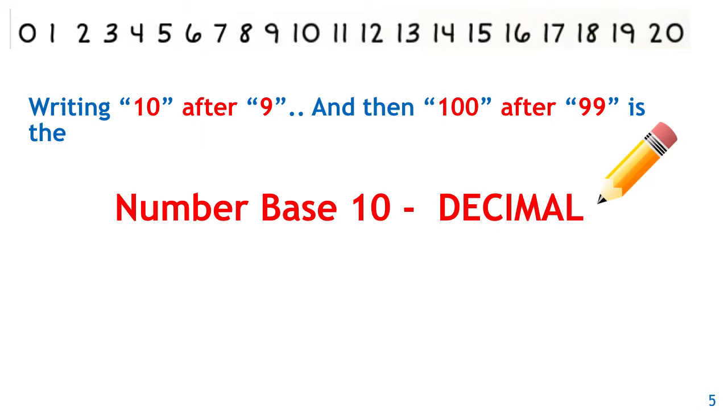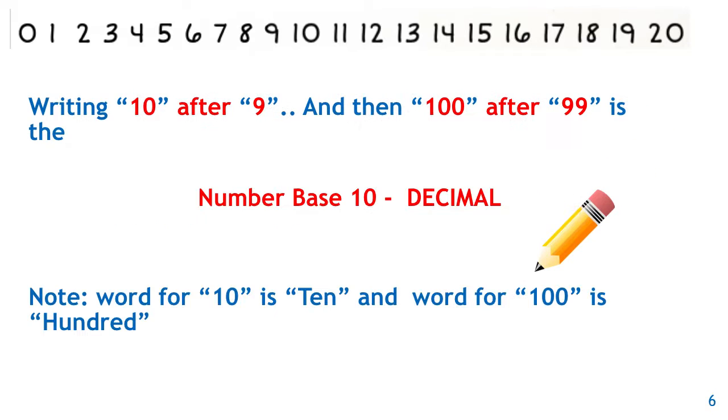And this way of writing, putting a 10 after nine and a 100 after ninety-nine, is known as the number base ten, or decimal. And note that the word for 10 is ten and the word for 100 is 100. We'll be using those again.